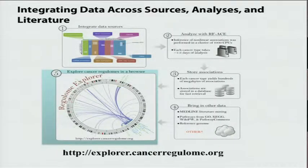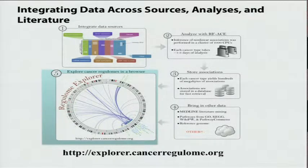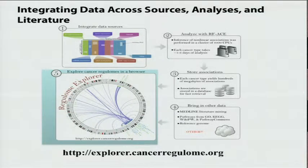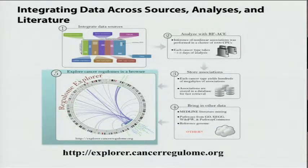We talk about integrating data sources, then performing analysis, storing associations, bringing in other types of data, and in the end visualizing it with tools. That highlighted screenshot is the circular view from Regulum Explorer — the genome level view. There's another arrow that points back to the beginning, because it's really an iterative process where results are understood and internalized, and then the user proposes a new data matrix to run the analysis on, or a new analysis to run.